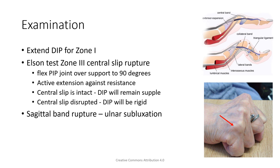Whereas if the central slip is ruptured, the patient is attempting to extend the PIP with the use of the lateral bands, which then form the conjoined tendon and insert into P3, and this will therefore cause rigidity. That's the basis of the Elson test. I spent a little time on this so that you can understand the complexity of the extensor mechanism and the pathological basis for the test.